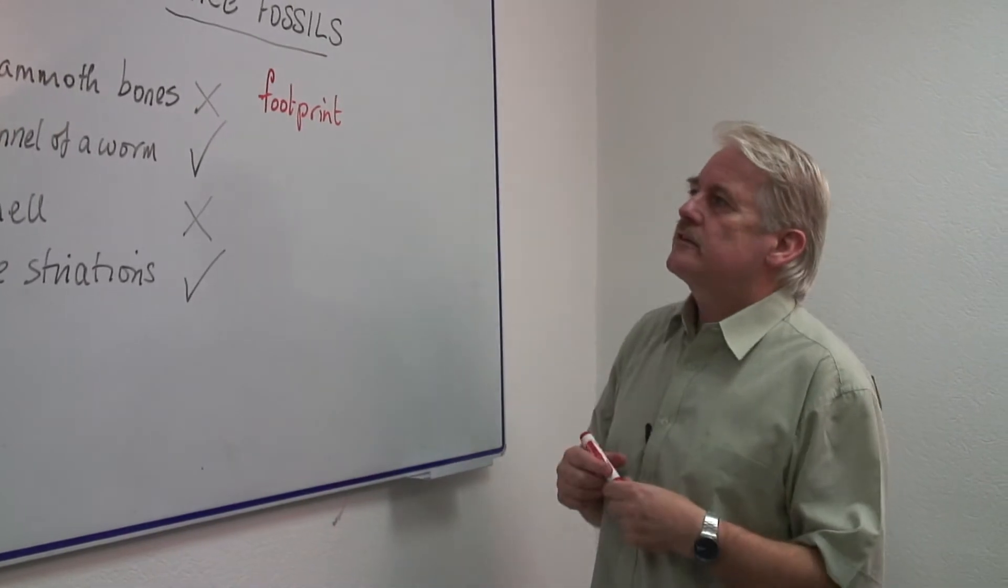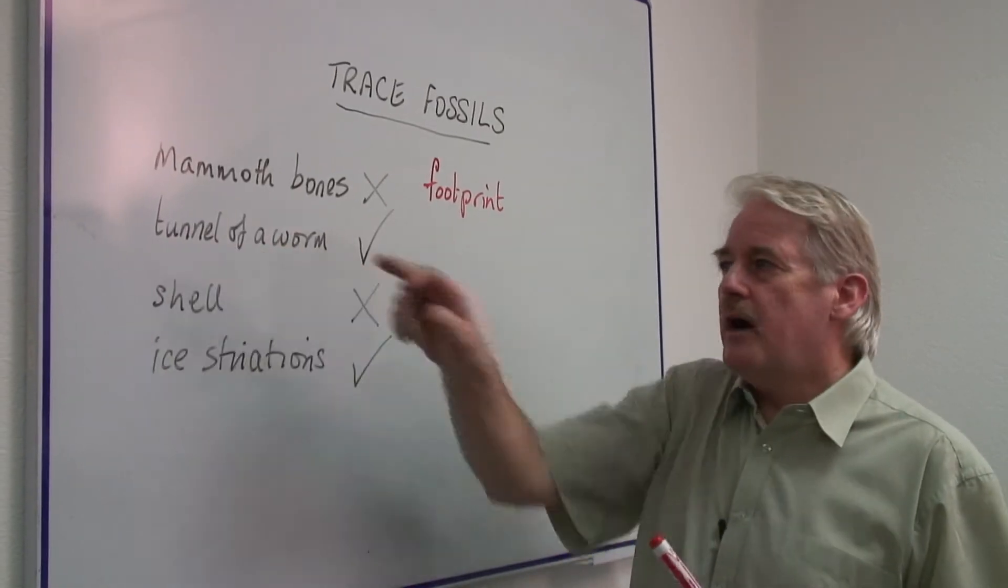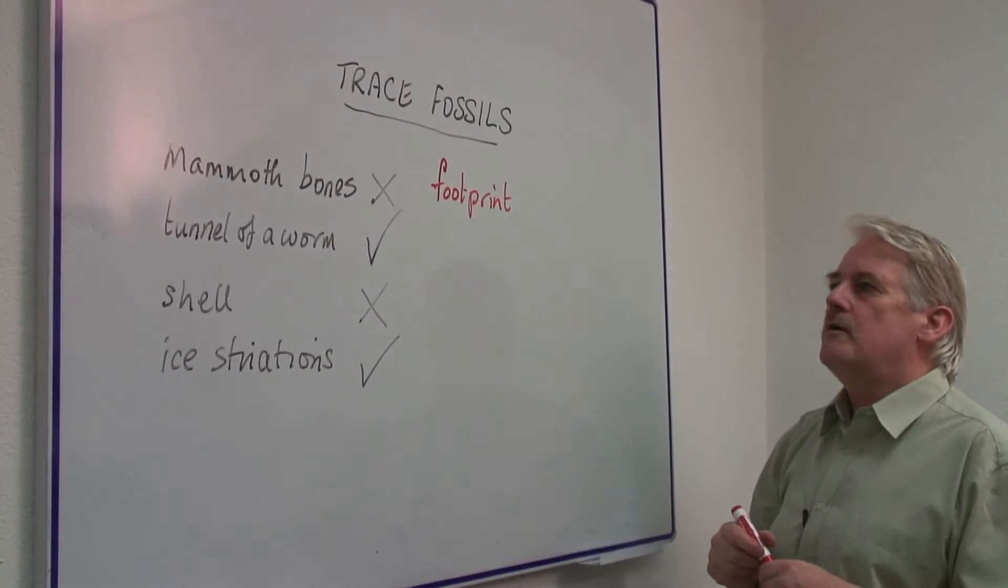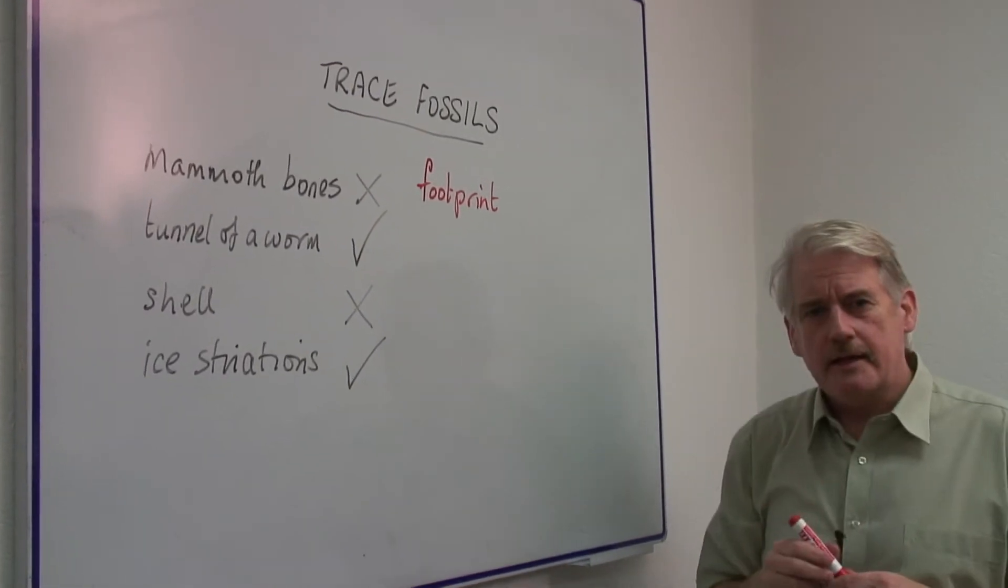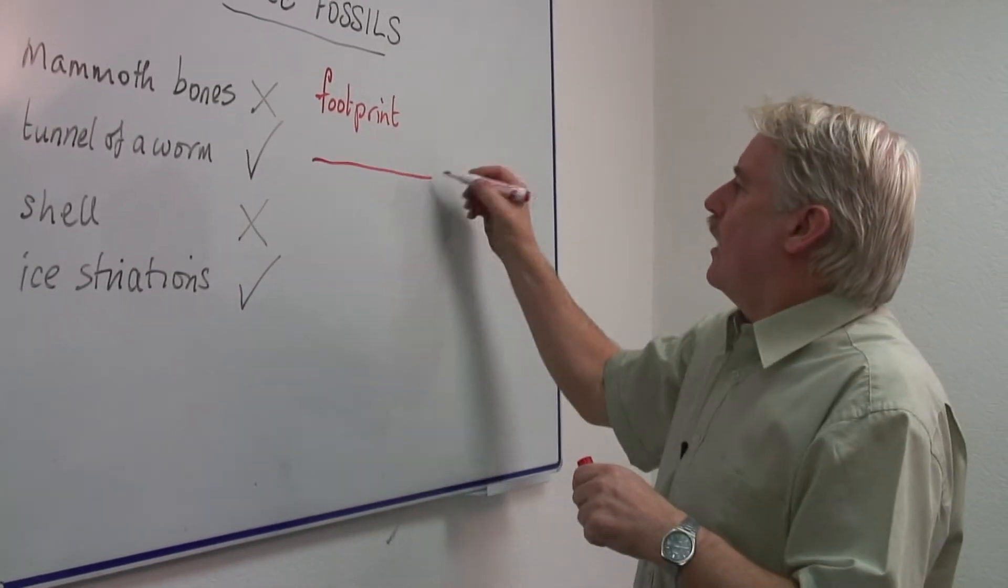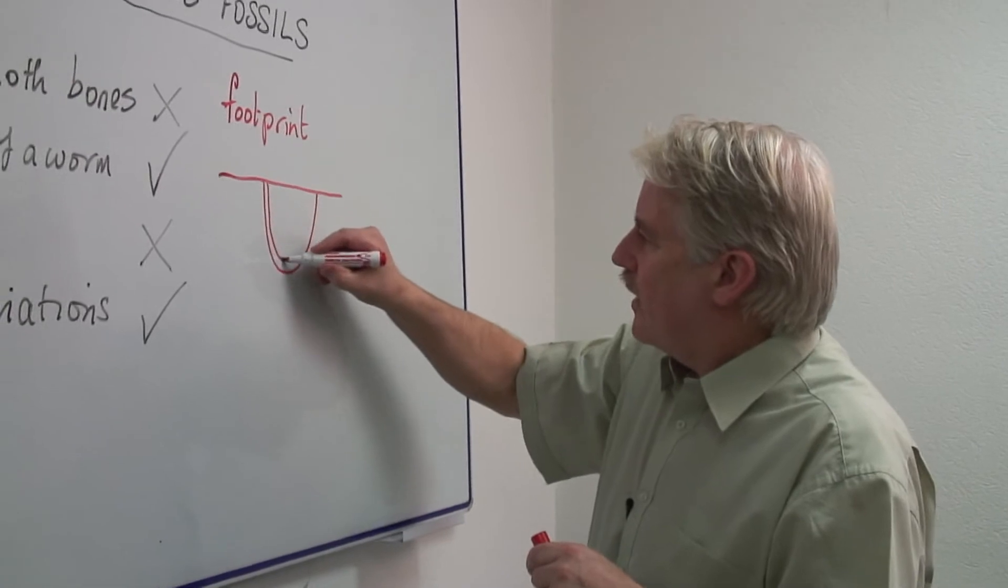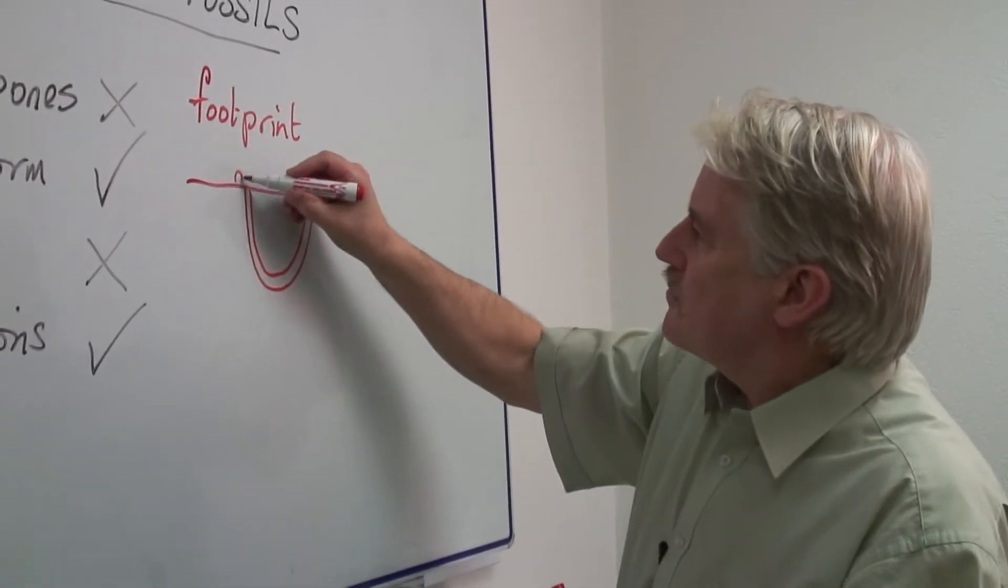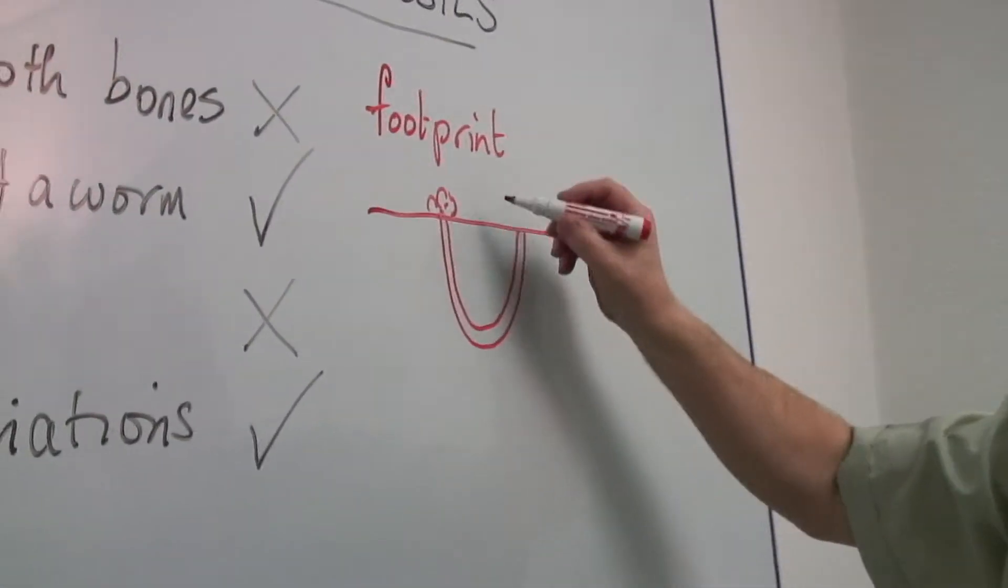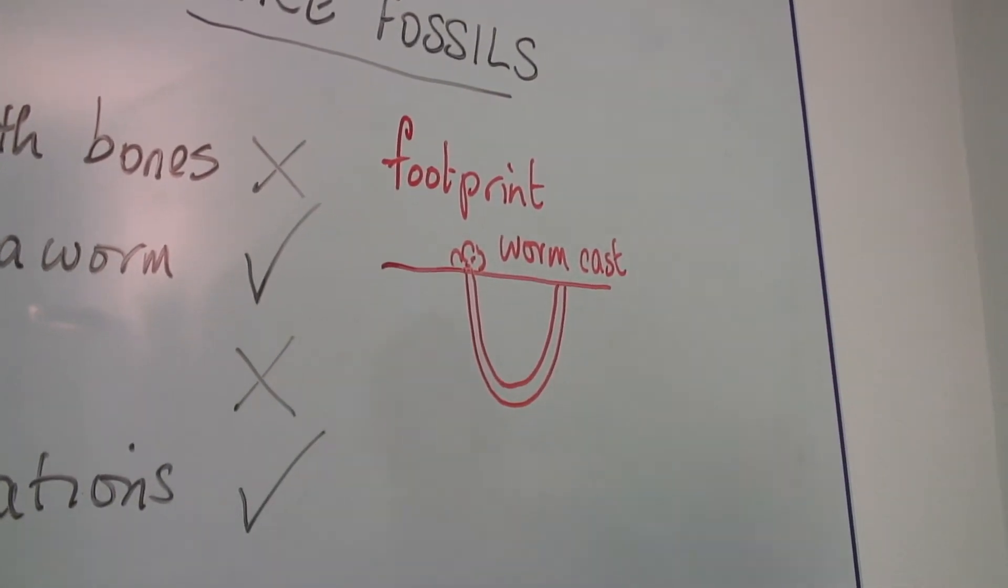The other kinds of things we might find—we know it's not a mammoth bone and we don't find a worm, but we might find the tunnel of a worm. And the reason for that is that the worm will burrow under the mud in this way. And as it does so, it produces a little thing called a worm cast. This can tell us a great deal.